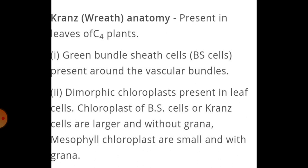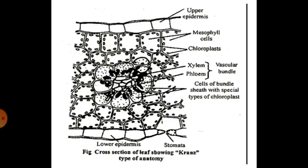Since bundle sheath cell chloroplasts have no grana, that means there is no light reaction occurring there. Now you can see this is the cross section of a leaf showing Kranz anatomy. The vascular bundle is located in the center, away from the surface, and the cells around it are the bundle sheath cells which have a special type of chloroplast.